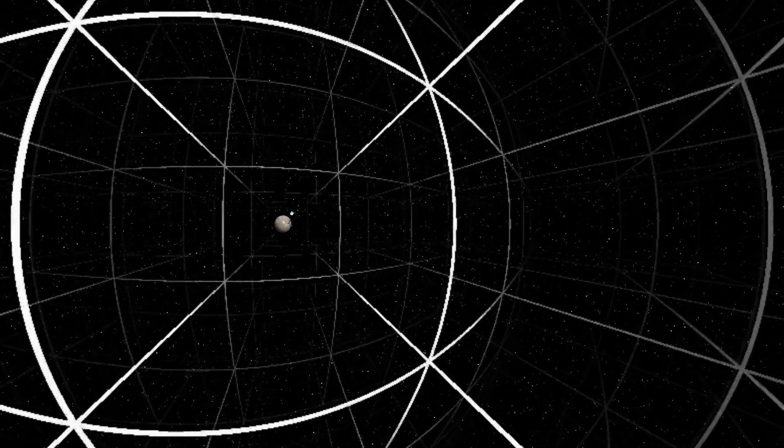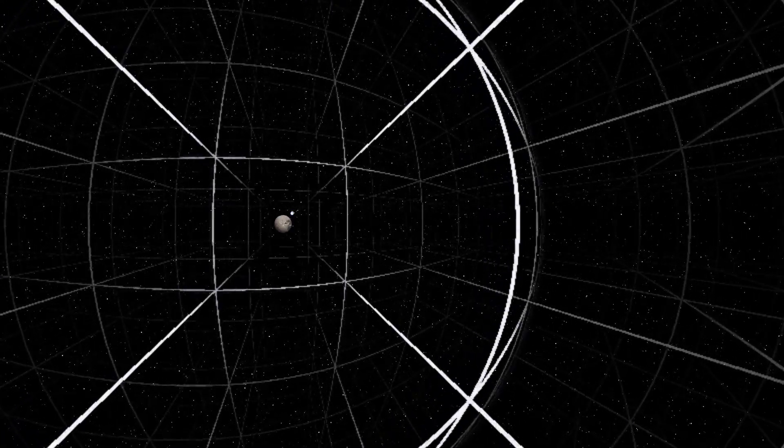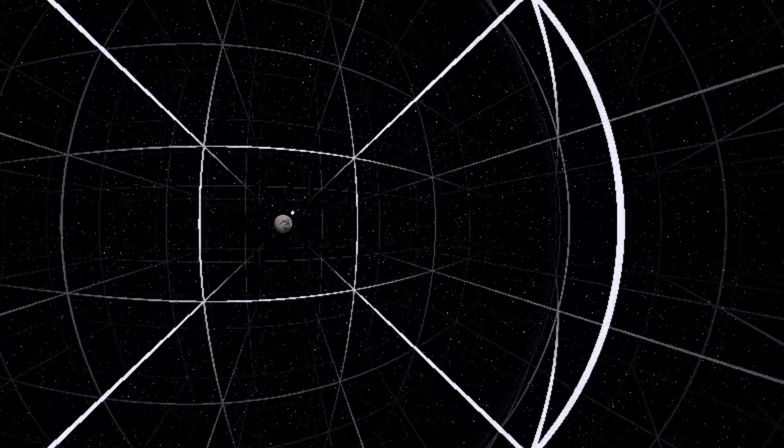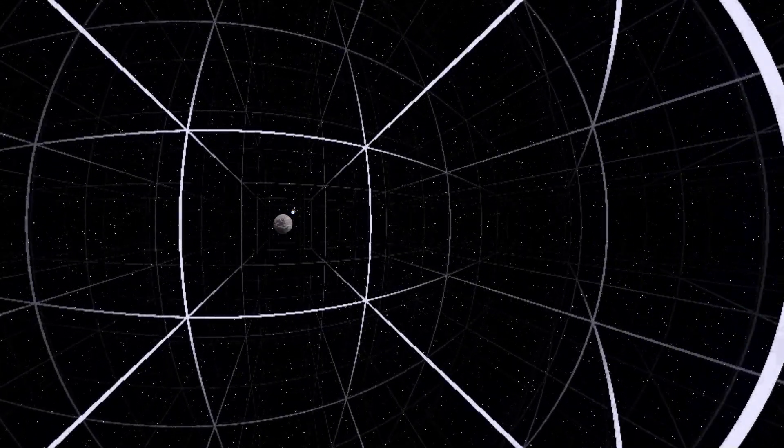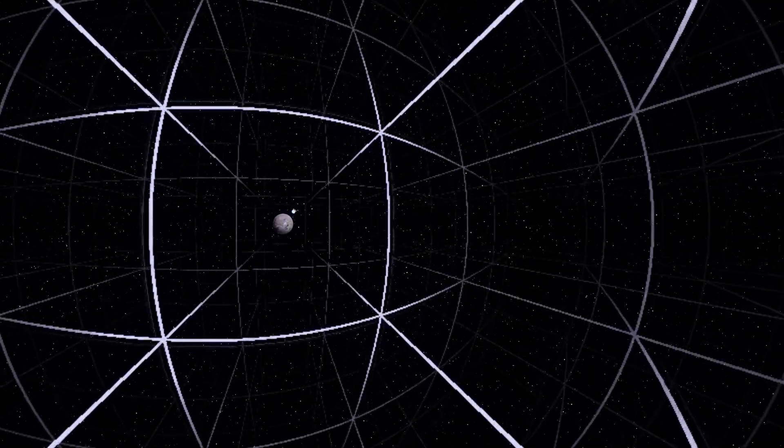The spacecraft moves closer to Proxima Centauri B. We receive the photos of Proxima Centauri B more and more frequently, making its clock tick faster and faster.